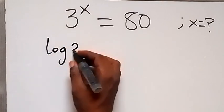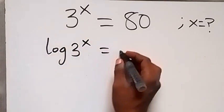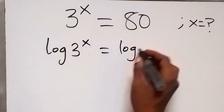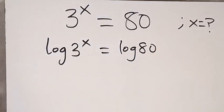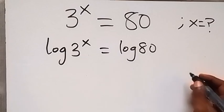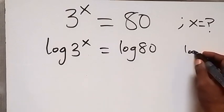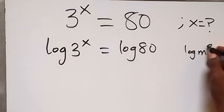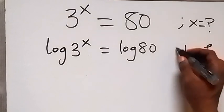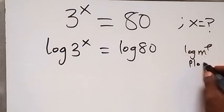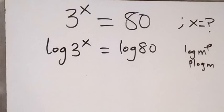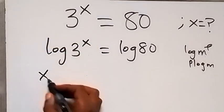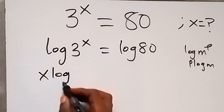When we apply the power law of logarithm, when we have log m raised to power p, this power of p can come to the back and this will be p log m. Applying this law here, we have x coming to the back, so we have x log 3.